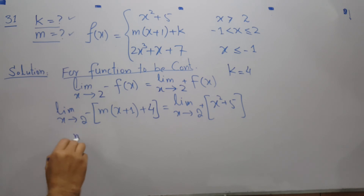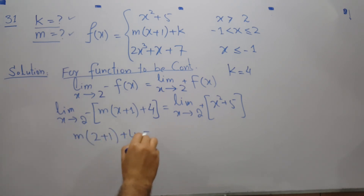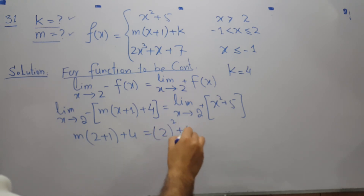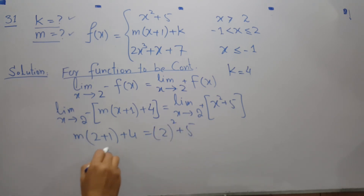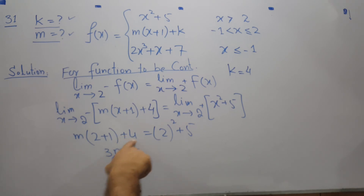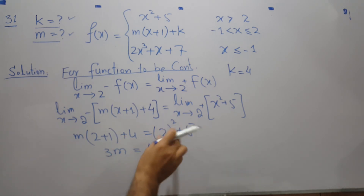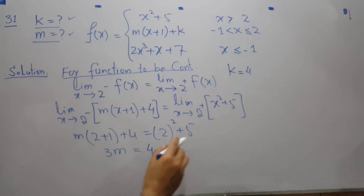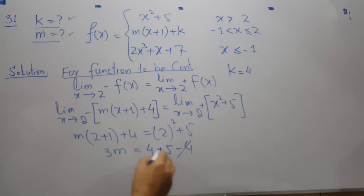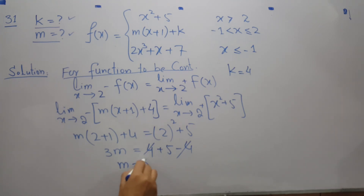Applying the limiting value of 2: on the left we get 3m plus 4 and on the right we get 2 squared plus 5, which is 9. Moving 4 to the other side gives 3m equals 9 minus 4, so 3m equals 5, meaning m equals 5 over 3.